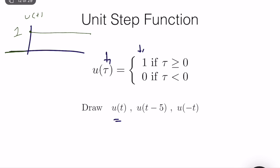If it's a voltage source, it means that the voltage before t equal to 0 is 0, but the voltage value of the voltage source is equal to 1 when t is greater than 0. It can be similar to a switch.